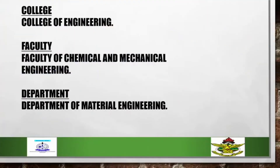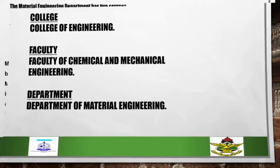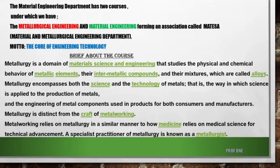The department falls under the College of Engineering, Faculty of Chemical and Mechanical Engineering, Department of Material Engineering. The Material Engineering department has two courses: Metallurgical Engineering and Material Engineering, forming an association called MATISA — Material and Metallurgical Engineering Department. The motto is: the core of engineering technology.